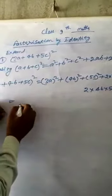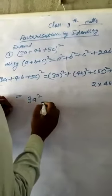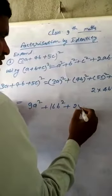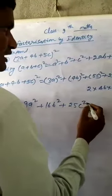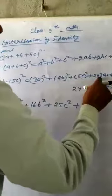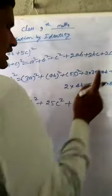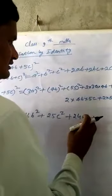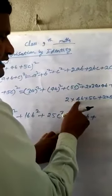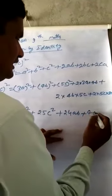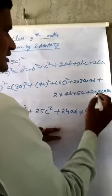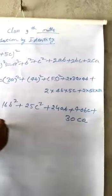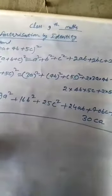We get 3 times 3 is 9A square, plus 4 times 4 is 16B square, plus 5 times 5 is 25C square, plus 2 times 3 times 4 is 24AB, plus 2 times 4 times 5 is 40BC, plus 2 times 5 times 3 is 30CA. This is the expanded form.